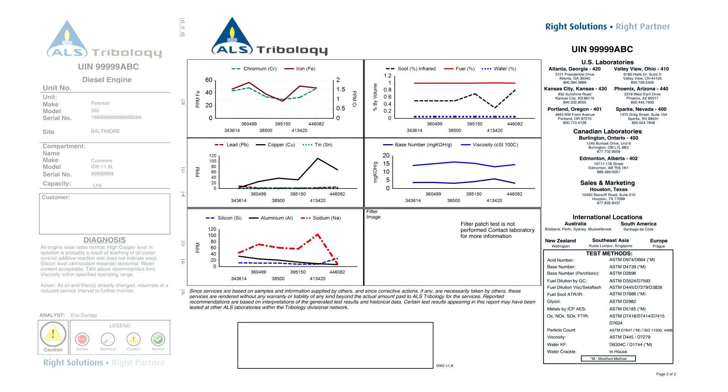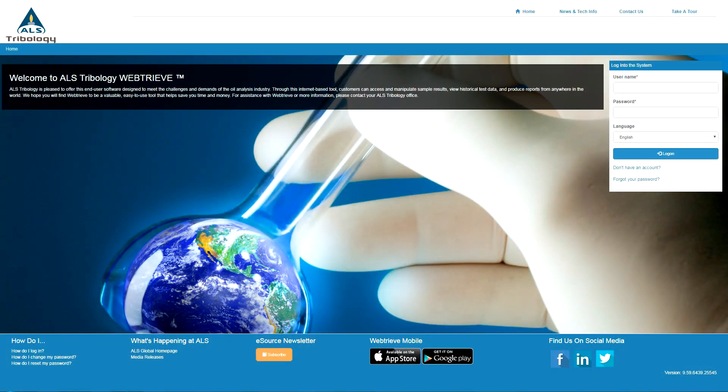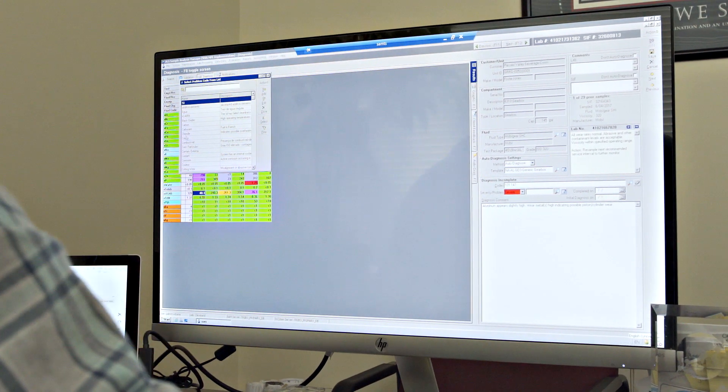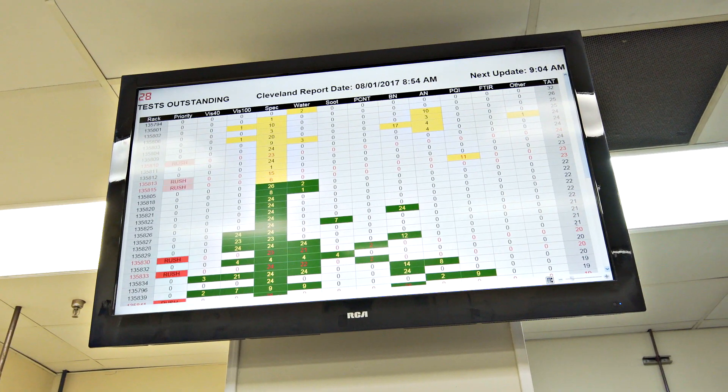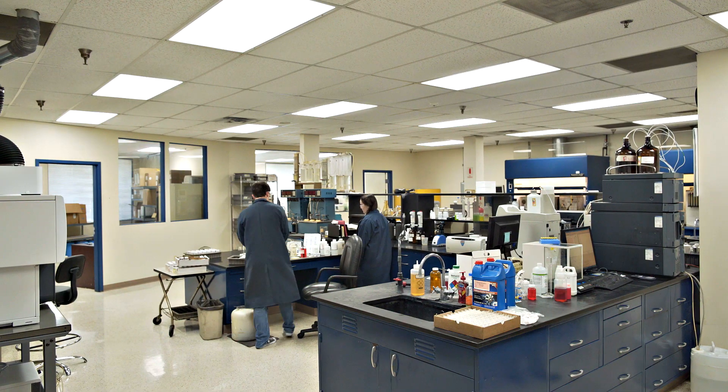The final report is sent to the recipient via email or can be accessed through the WebTree website or mobile app. ALS has the capability to establish report distribution lists based on condition, account hierarchy, or custom lists. Severe results requiring immediate maintenance action will be phoned in to the appropriate contact.